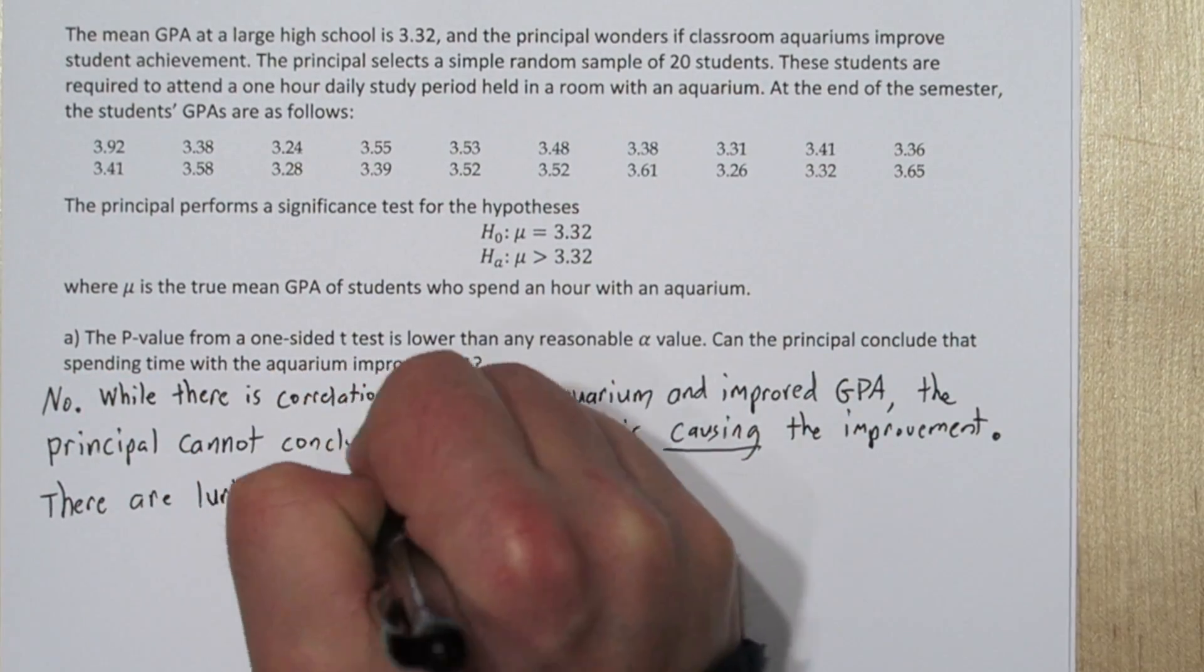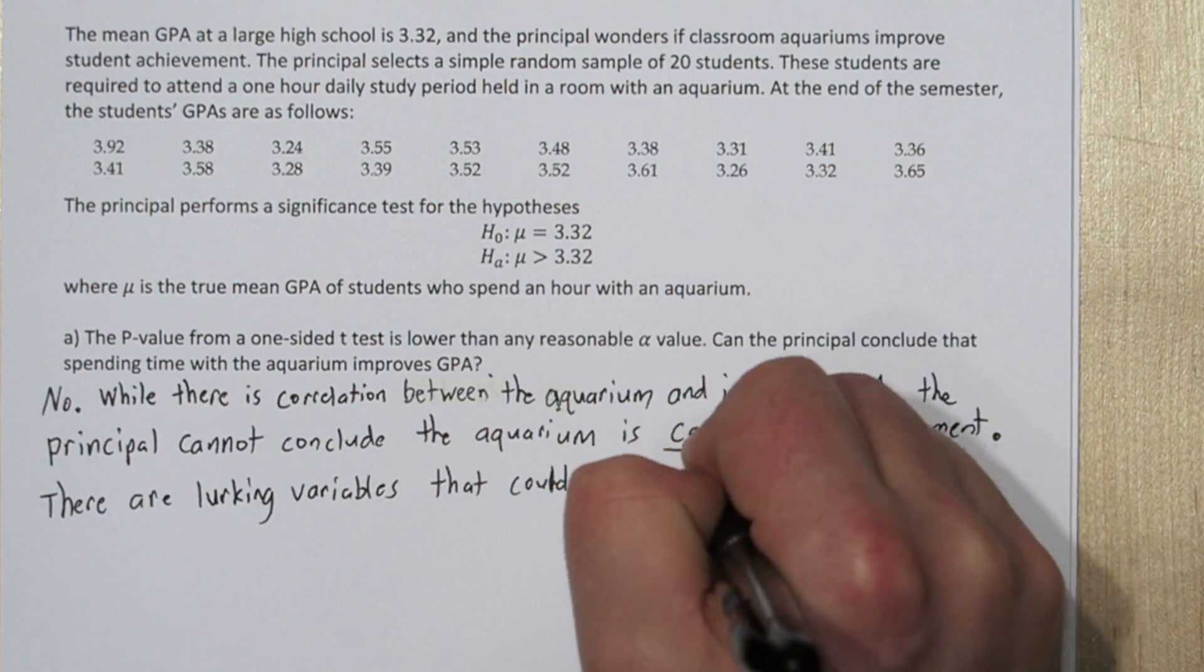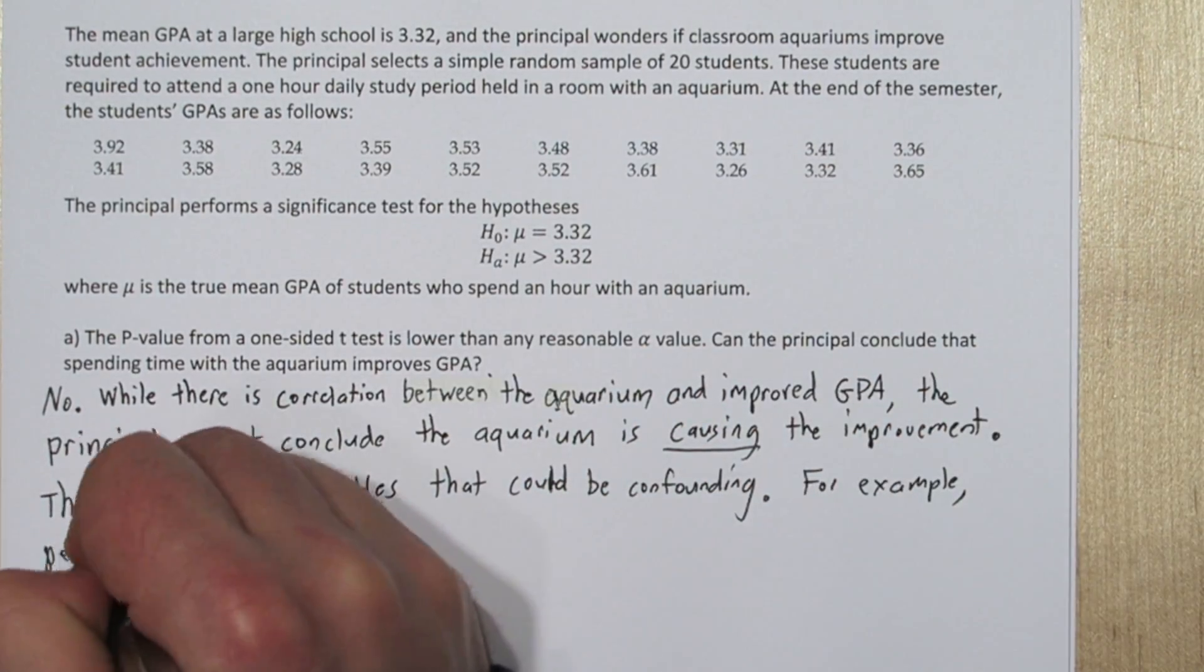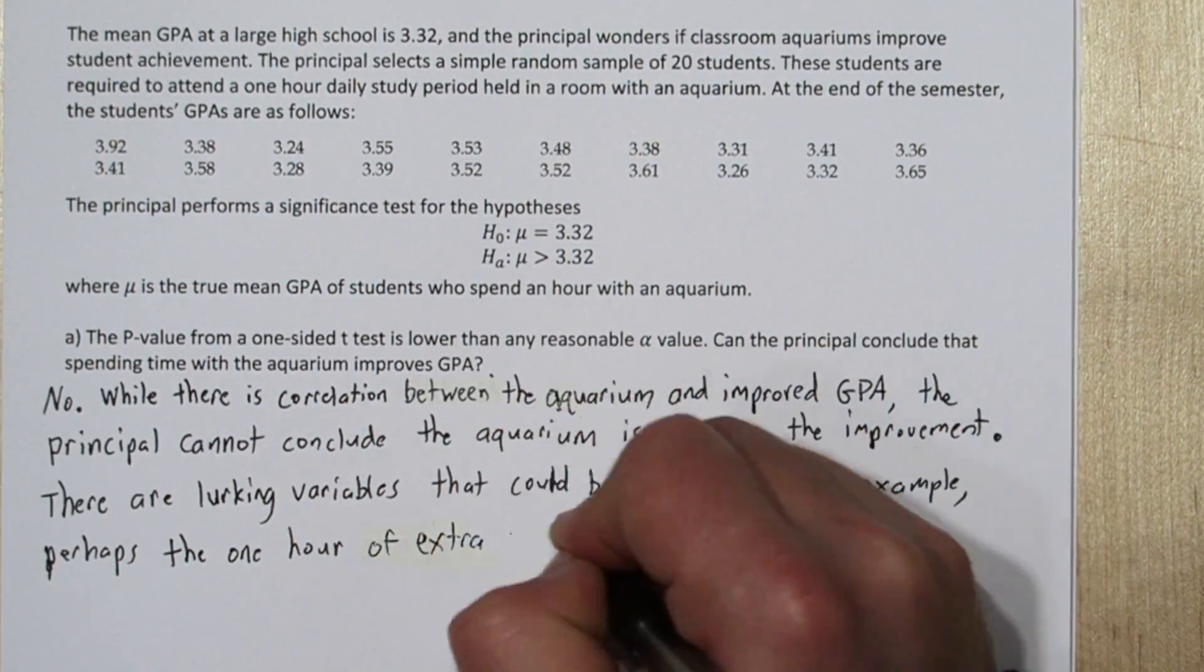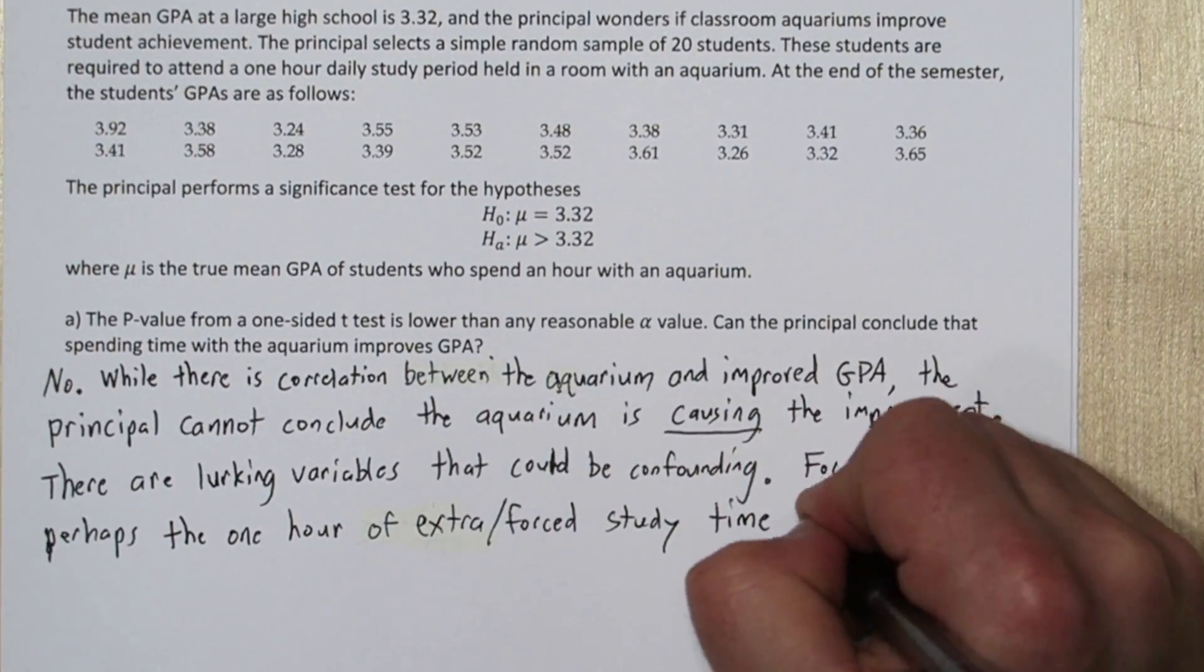There are lurking variables, and some could be confounding. For example, perhaps the one hour of extra-slash-forced study time is responsible for the GPA increase.